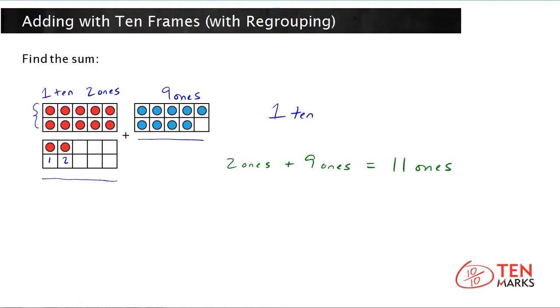Now you can't have a double digit number that represents the ones, right? So the ones have to be a single digit number. And this is why we need to regroup.